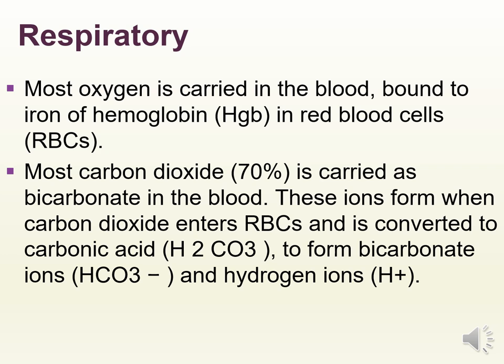Most oxygen is carried in the blood bound to the iron of hemoglobin in red blood cells. Most carbon dioxide is carried as bicarbonate in the blood. These ions form when carbon dioxide enters the red blood cell, is converted to carbonic acid, and then forms bicarbonate ions and hydrogen ions.